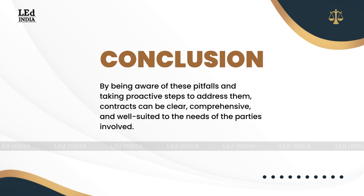In this chapter, we have explored the pitfalls to avoid in contract drafting, including ambiguity and vague language, incomplete or missing provisions, failure to consider potential contingencies, inadequate risk allocation and liability provisions, and neglecting to account for changes in circumstances. By being aware of these pitfalls and taking proactive steps to address them, you can draft contracts that are clear, comprehensive, and well-suited to the needs of the parties involved.